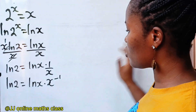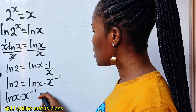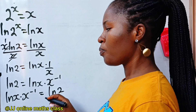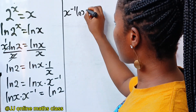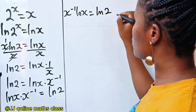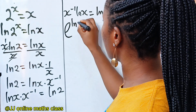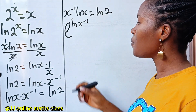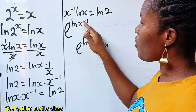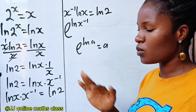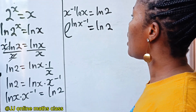So first, permit me to transfer this to the other side. I now have ln(x) multiplied by x to the power of minus 1 is equal to ln2. From here, we can say x^(-1)·ln(x) is equal to ln2. Now let's introduce e. We have e to the power of ln(x) to the power of minus 1. Remember, e to the power of ln(A) is A, so e to the power of ln(x^(-1)) is still x^(-1). We have not changed anything — it is equal to ln2.